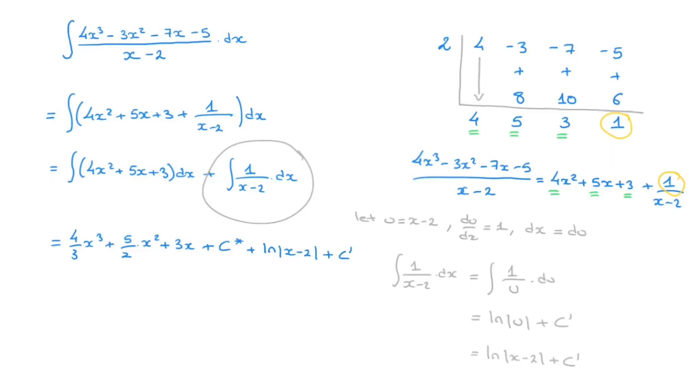And now the last step I'll make is to say that rather than writing c* and c', I'll just combine those two constants and say that c, some other constant, is equal to c* + c'. And we can now write the final answer as 4/3 x³ + 5/2 x² + 3x + ln|x - 2| plus some constant of integration c.